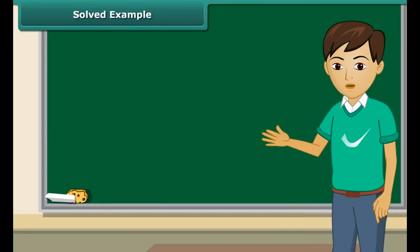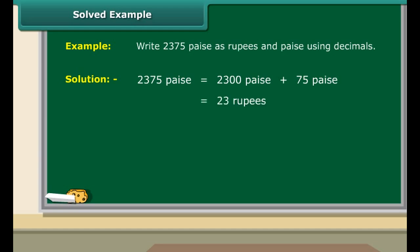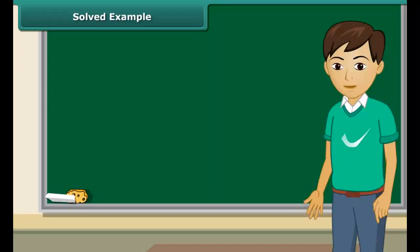Let us convert money expressed in paise into rupees using decimals. Express 2375 paise in rupees using decimals. 2375 paise equals 2300 paise plus 75 paise, which is the same as 23 rupees plus 75 paise. This can be expressed as 23 rupees plus 75 upon 100 rupees, so the answer is 23.75.